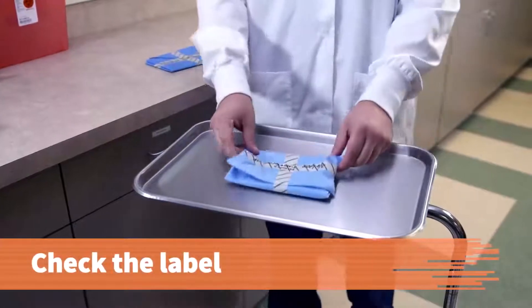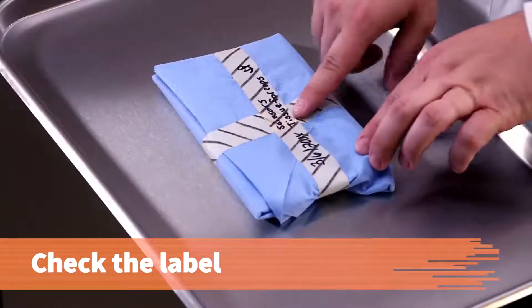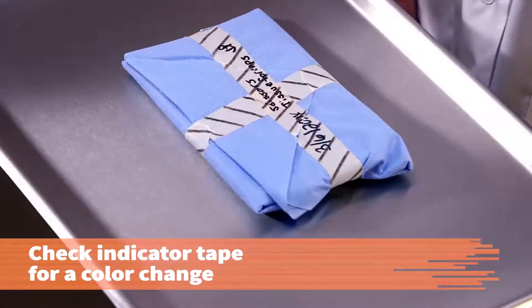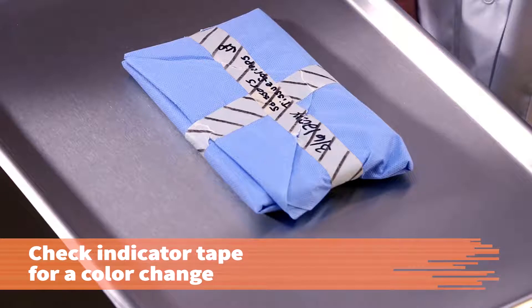Place the instrument pack on the Mayo stand or countertop and check the label again. Autoclave indicator tape changes color after the sterilization procedure, so check the indicator tape for a color change.